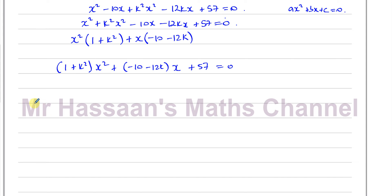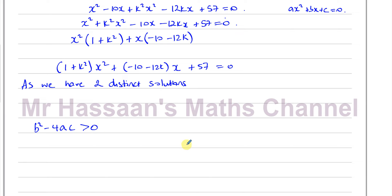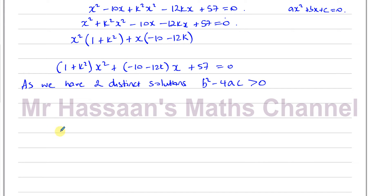Since there are two distinct solutions, the discriminant b² - 4ac must be greater than 0. Here: a = 1 + k², b = -10 - 12k, and c = 57.